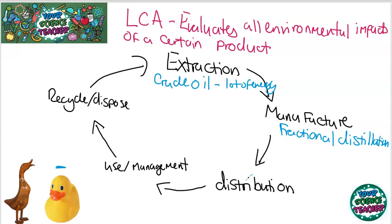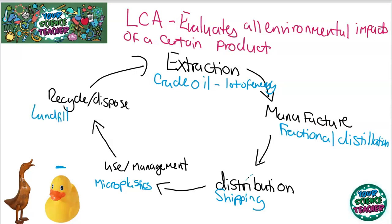Distribution depends on where that rubber duck is made. A lot of plastics that we get in the UK are shipped over from abroad, so it will take into account the shipping of that product. For use and management, environmental factors can also take into account whether there is any impact on the environment whilst it's in use. A lot of plastics will put into our environment something called microplastics when they come into contact with water, and this can have a bad environmental effect — plastics get into the seawater and get eaten by fish, and there is a plastic accumulation in the sea. Often these plastics cannot be recycled, so when they're disposed of they usually end up in a landfill and are not biodegradable.